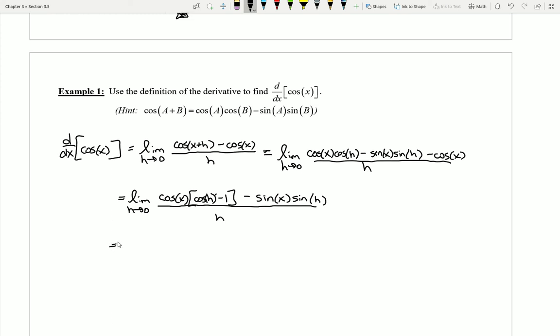Now what we can do is we can separate this into two separate fractions: limit h goes to zero cosine of x times the cosine of h minus one all over h, and then minus a limit as h goes to zero of the sine of x times the sine of h over h.